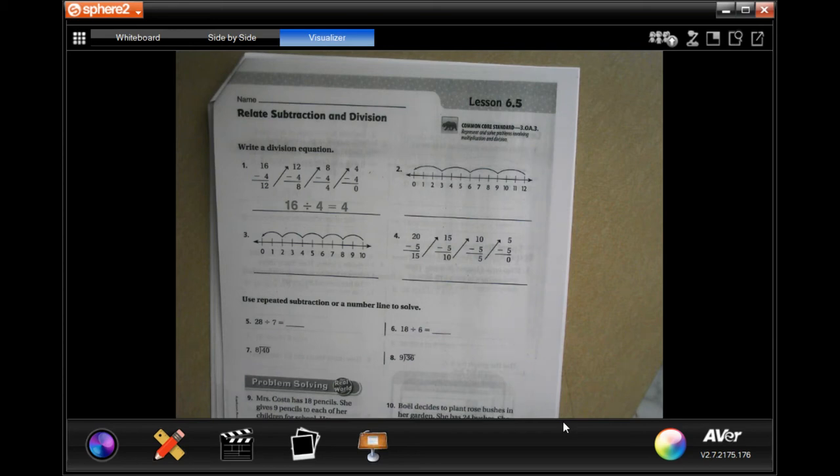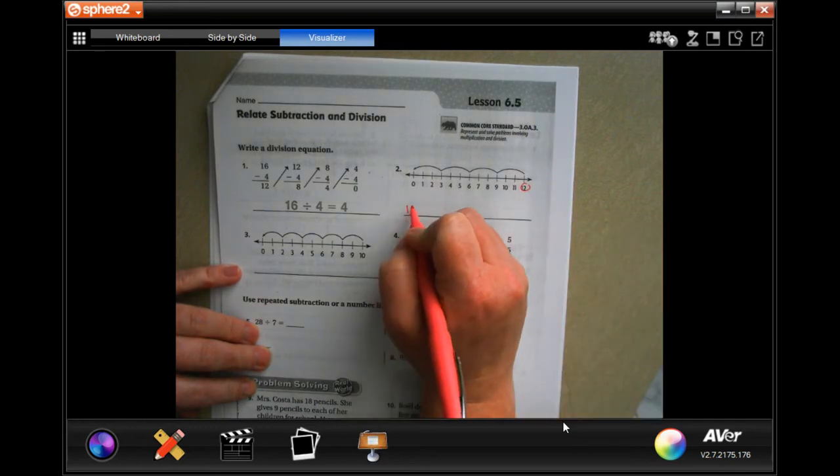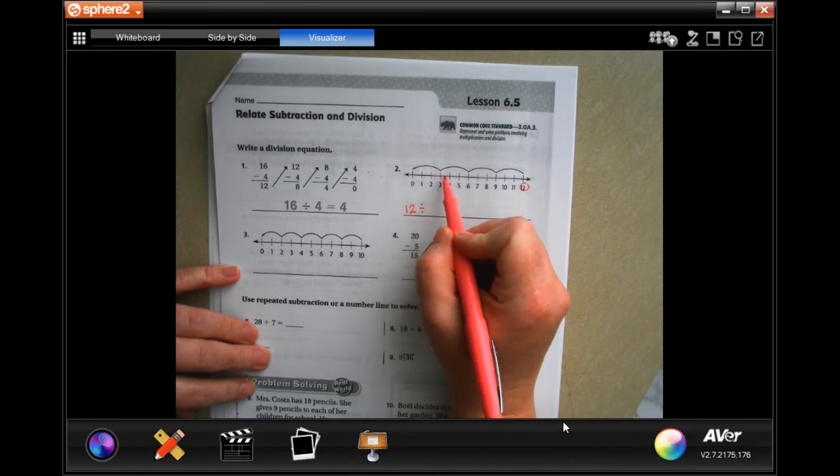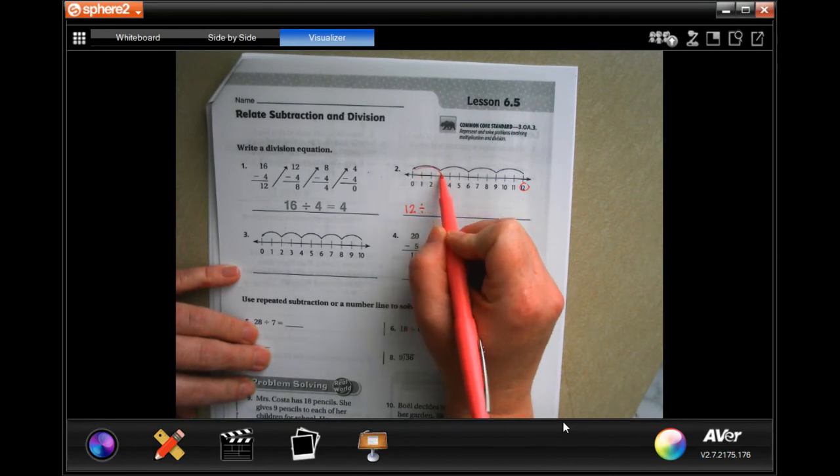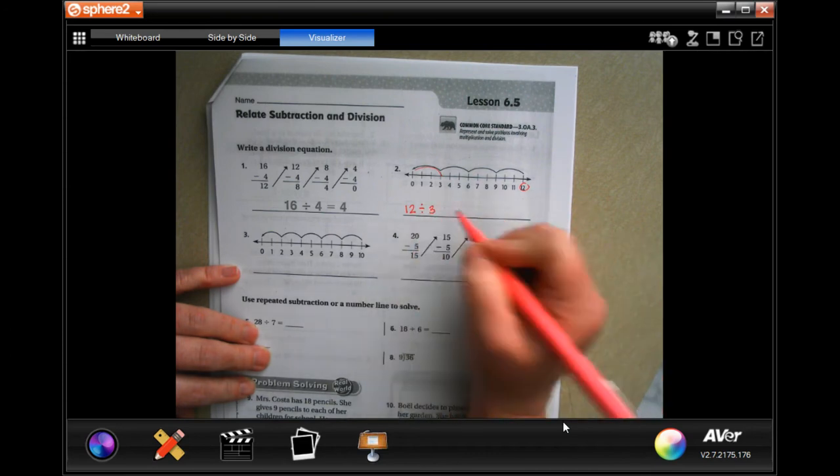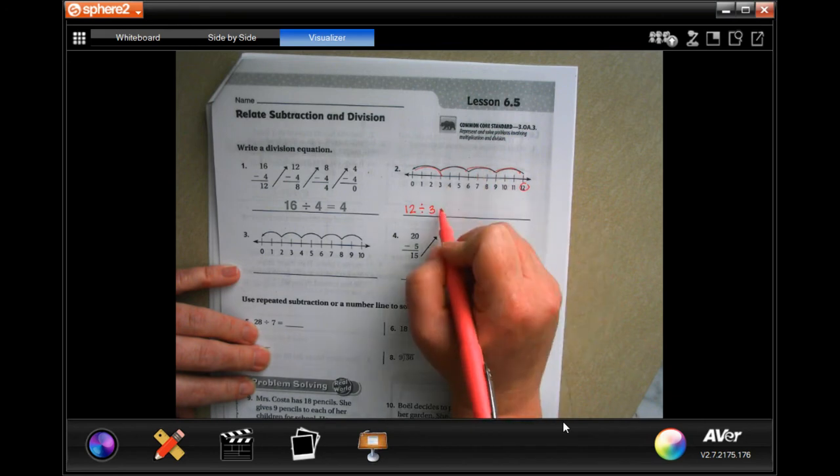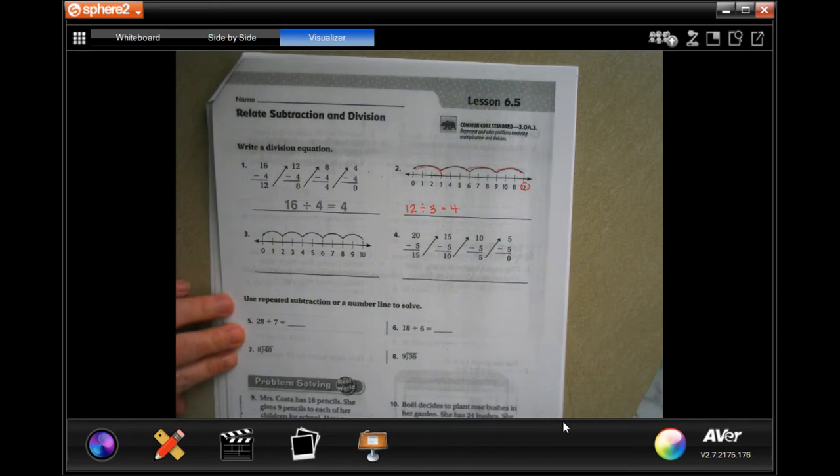Hi guys, welcome to third grade chapter six lesson five. We're going to get another taste of division today. On this one, the end result is 12. We're going to divide it by how many we're counting. We're counting by three, and then we have one, two, three, four of those, so there's four.